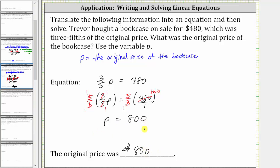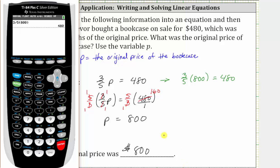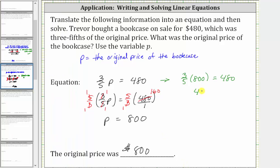Let's verify p equals 800 does satisfy the equation three-fifths p equals 480. Substituting 800 for p gives us three-fifths times 800 equals 480. And let's check the product on the left on the calculator. Notice three-fifths times 800 is 480. 480 equals 480 is true. Verifying the solution is correct.